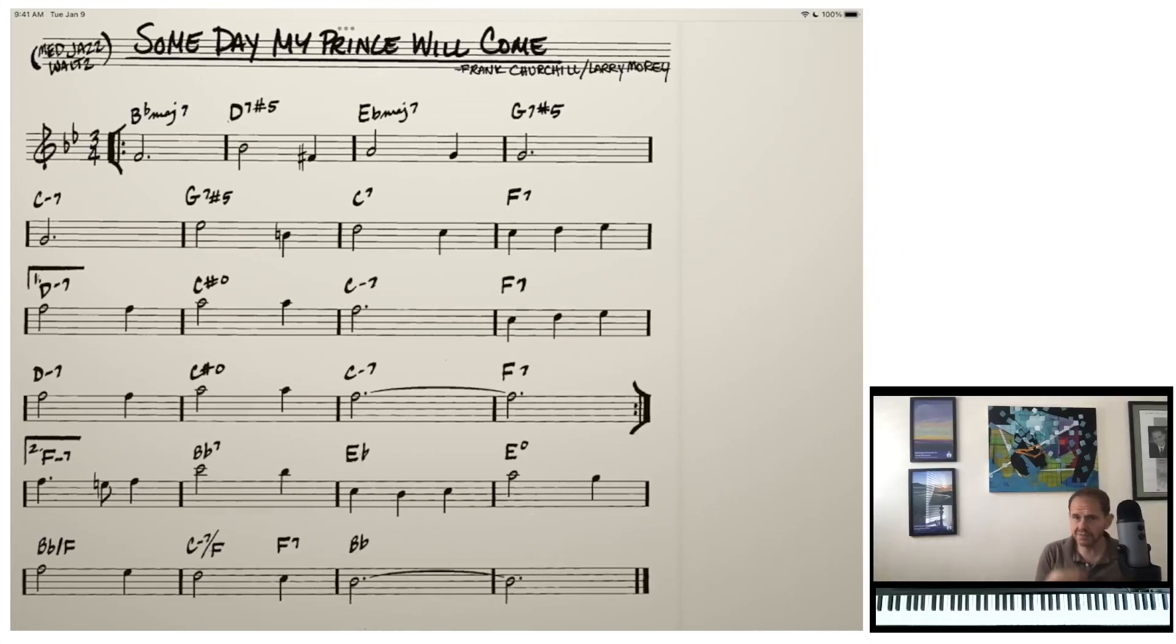And what I want to talk about today is how to start thinking about creating an arrangement. This could be a solo piano arrangement, it could be a trio arrangement, and I think these same concepts could be applied to creating a much larger arrangement. But we're mostly pianists here, so we're probably going to think mostly in terms of putting things on the piano. So I thought that a tune that a lot of people know and love and would be fun to play around with is Someday My Prince Will Come.